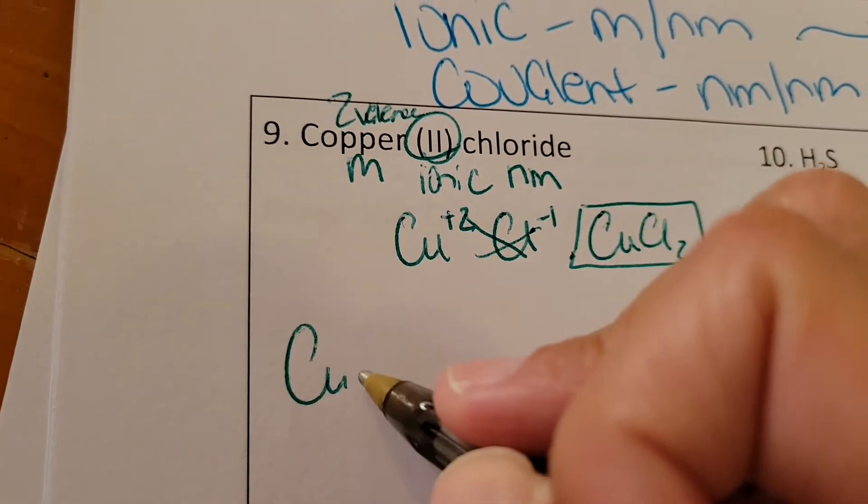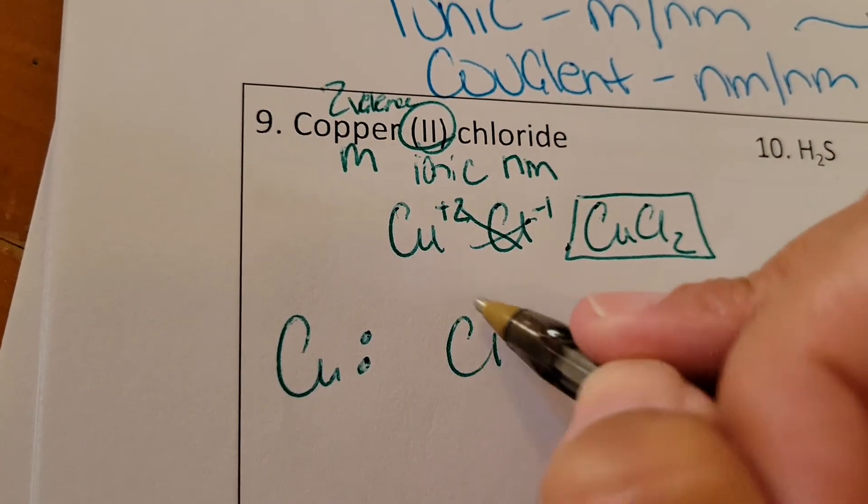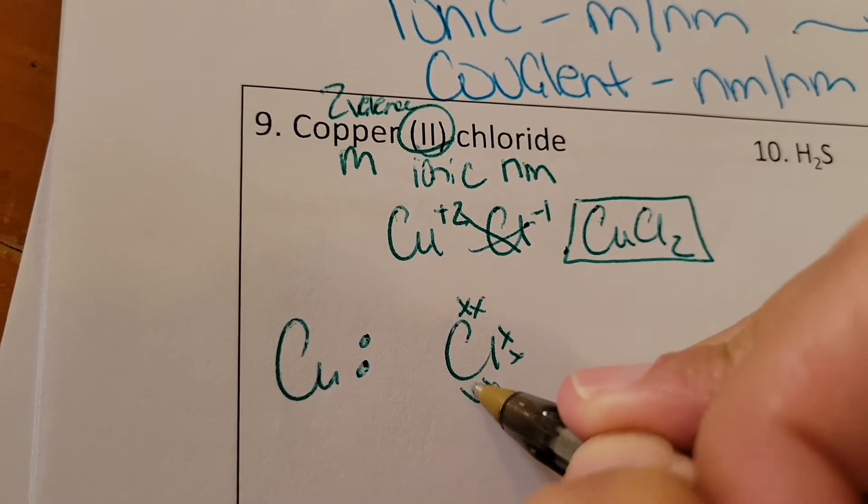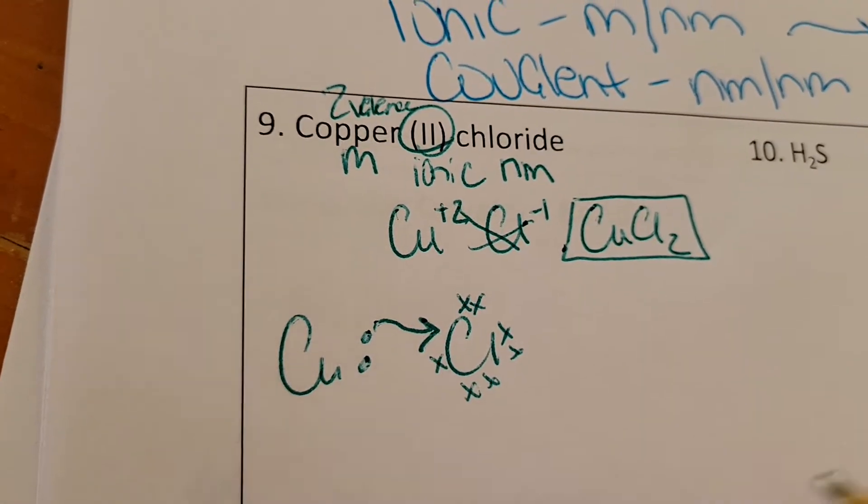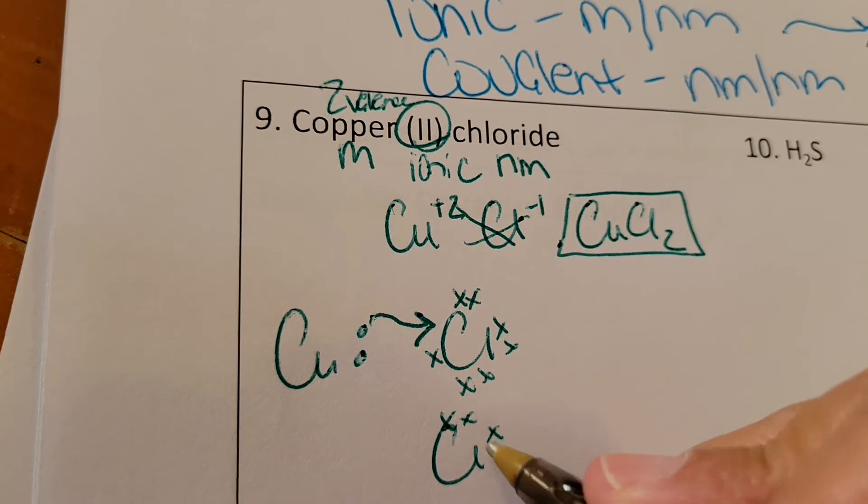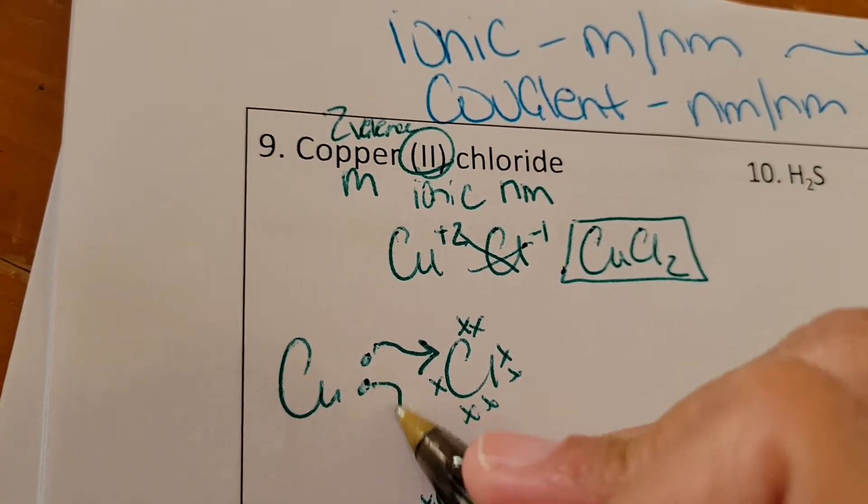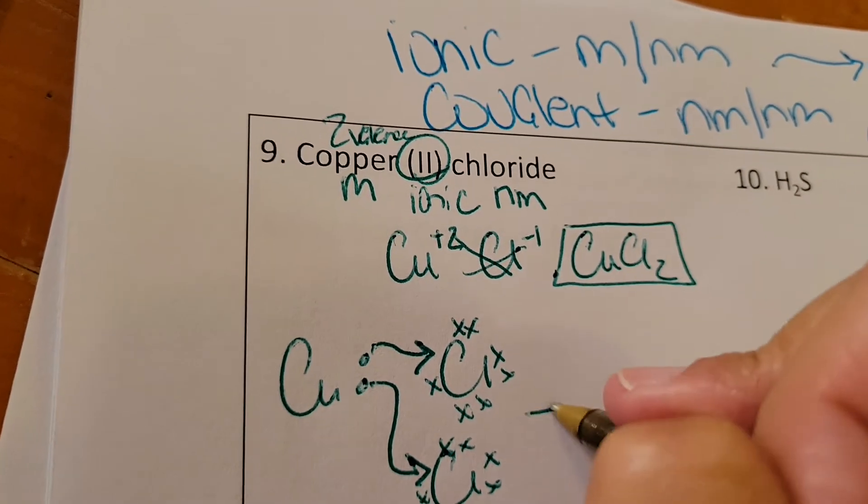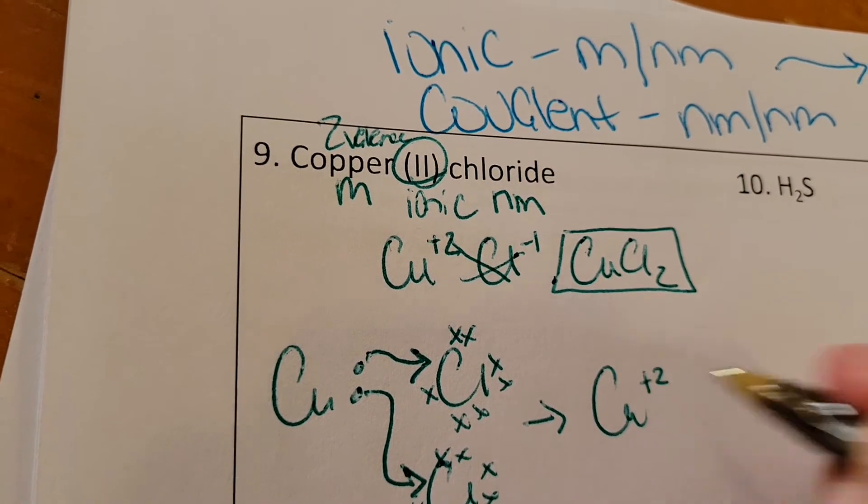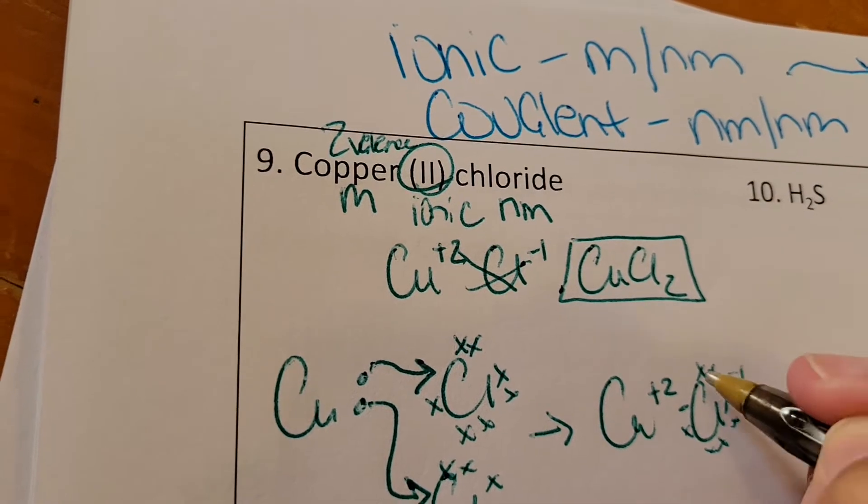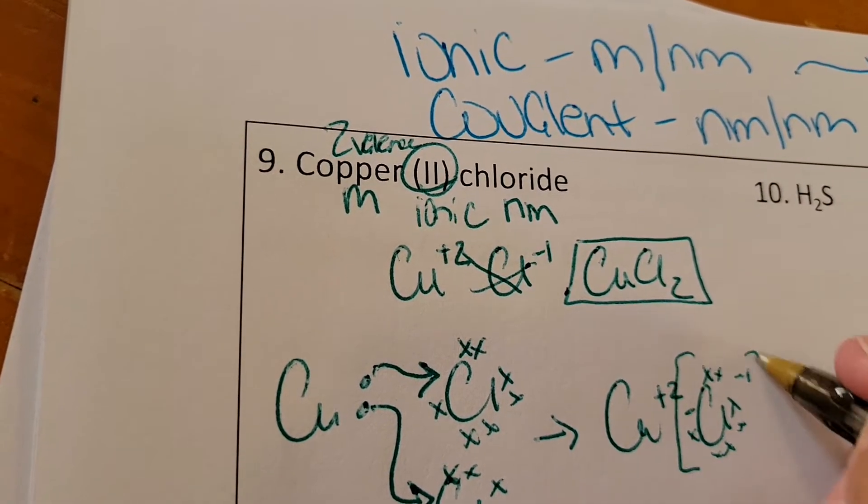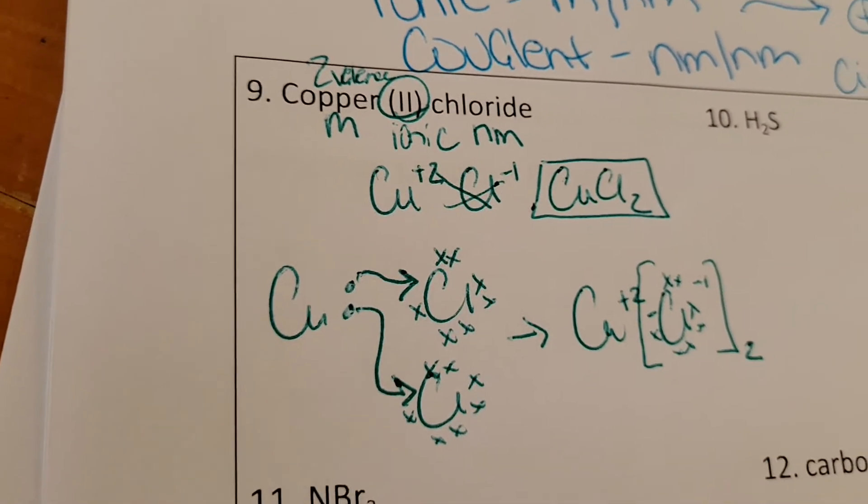So copper has two valence electrons, chlorine has seven. Because it's ionic, I'm going to give one to that one. I'm going to need another chlorine and give that one to there. So I end up with Cu with a plus two, chlorine with a minus one, and we have two of them.